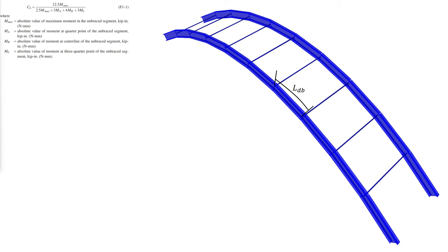In practice, most curved members are braced against lateral torsional buckling by continuous bracing systems. In the case of discrete braces, each segment can buckle between brace points. The buckling strength is dependent on the developed length along the member between braces. The lateral torsional buckling provisions in AISC Specification Chapter F can be used with the lateral torsional buckling modification factor CB, revised to consider the effects of curvature.